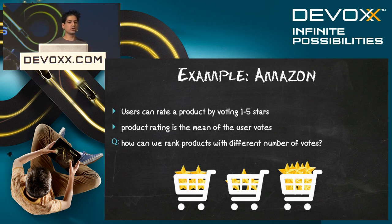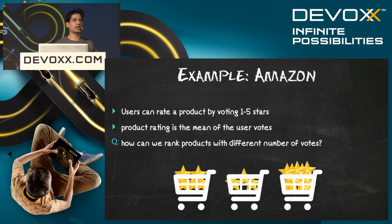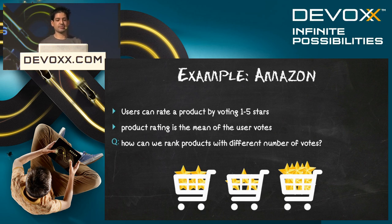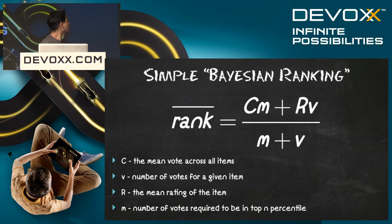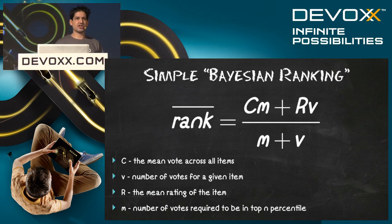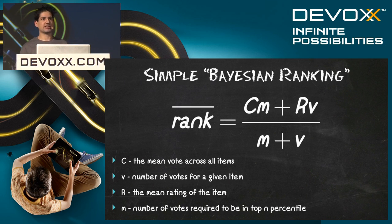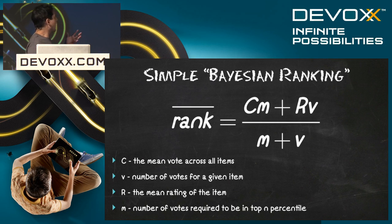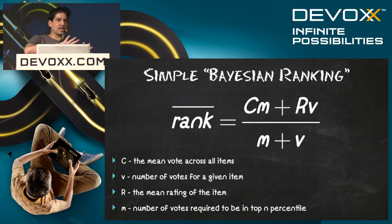Where does this come into play? You've all used Amazon, and you've probably noticed that when Amazon does its listings, it shows them by the number of average stars per item. However, they don't take into account the number of votes per item. So there could be one item with five stars listed above another item that has ten ratings of four stars. The one with more votes is going to be a more reliable indicator. So how can we overcome this? We can start with this idea of Bayesian ranking or Bayesian averaging.